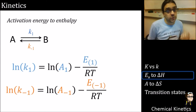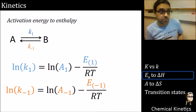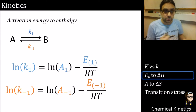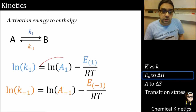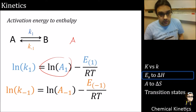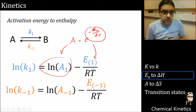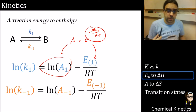We can take logs of the Arrhenius equation to make it linear. The pre-exponential factor A comes down as ln A, and the activation energy term Ea/RT comes down as well. This applies both for the forward and backward reactions.